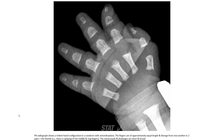The next case is also a case of achondroplasia. The PA radiograph shows a trident hand configuration in a newborn, where the fingers have approximately equal length and diverge from one another. The metacarpals are short and broad.